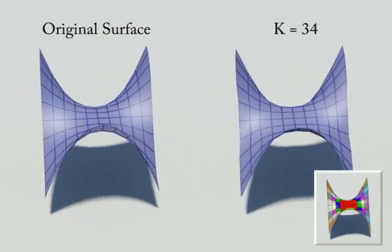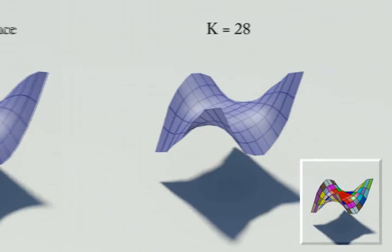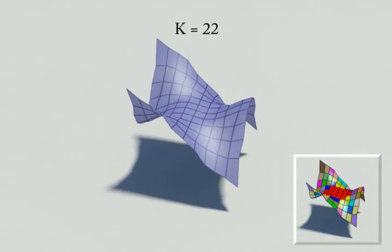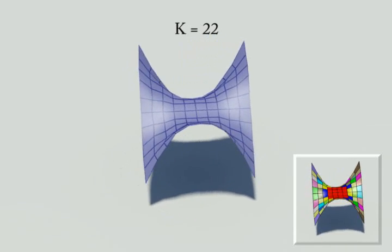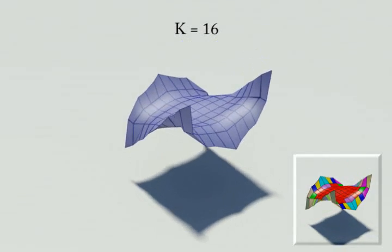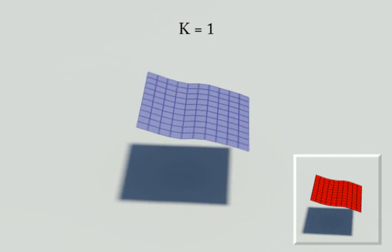Different k in monkey saddle. Monkey saddle is challenging because its left and right halves are mirror of each other. Hence, we need a relatively larger k to retain the surface appearance. As k decreases, we lose its curled part in the front. When k goes down further to 1, monkey saddle becomes flattened.